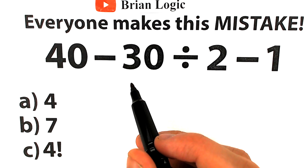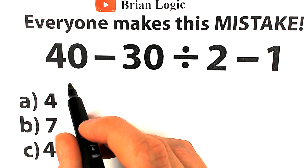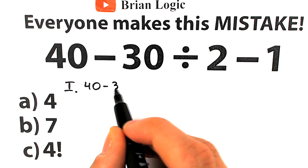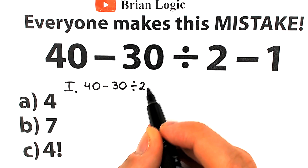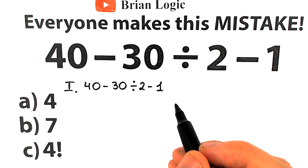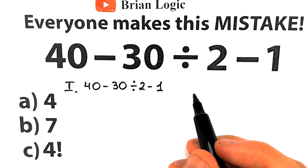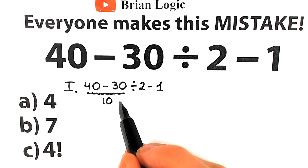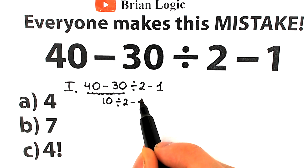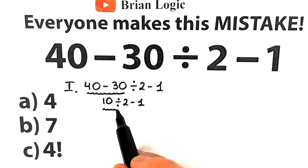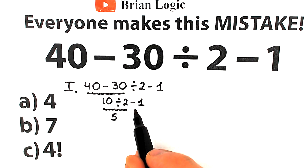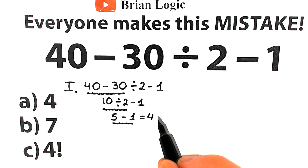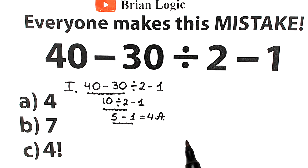So right now let's try to solve it. A lot of students solve this question like this — they go from left to right. We have 40 minus 30, which equals 10. Then we still have division by 2 and minus 1. Going left to right again: 10 divided by 2 equals 5, and 5 minus 1 equals 4. A lot of students say the correct answer is option A and move on.